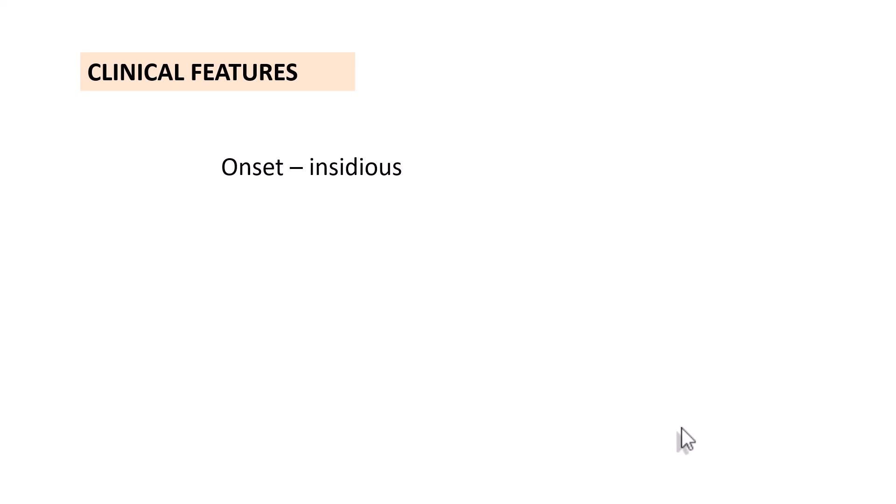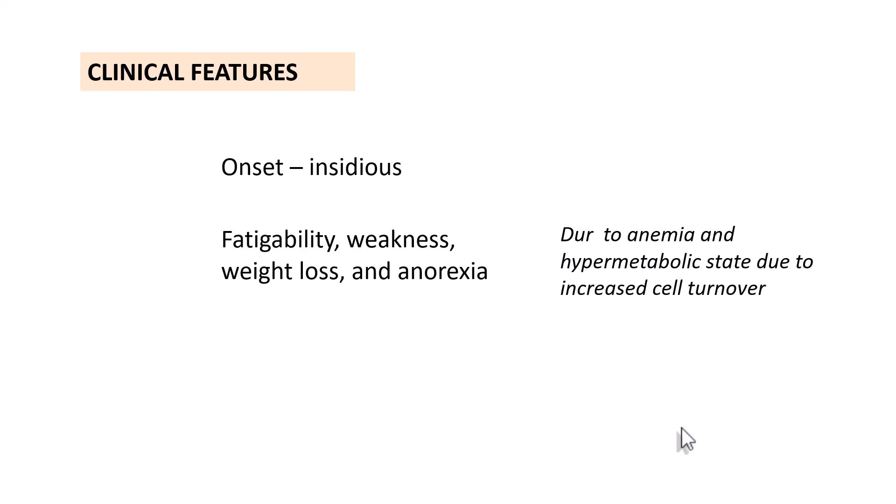What are the clinical features of CML? Most often, the onset is insidious. Patients might present with easy fatigability, weakness, weight loss, and anorexia. This is because of anemia — there is no proliferation of red blood cells — and because of a hypermetabolic state due to increased turnover in the bone marrow, which accounts for all these manifestations.